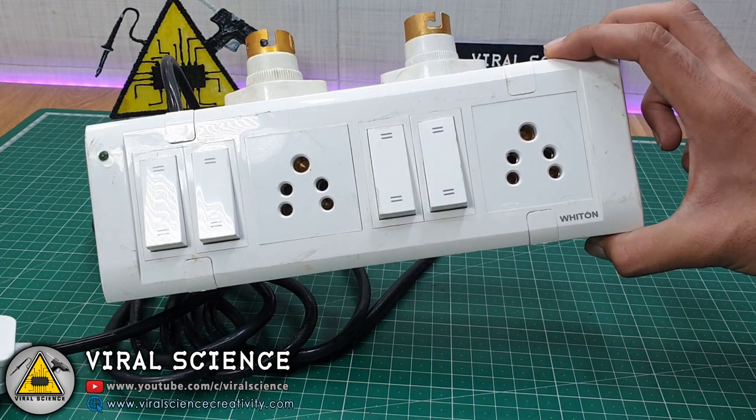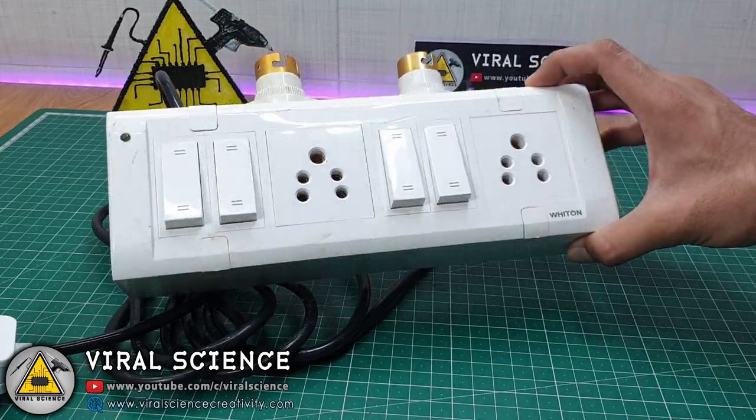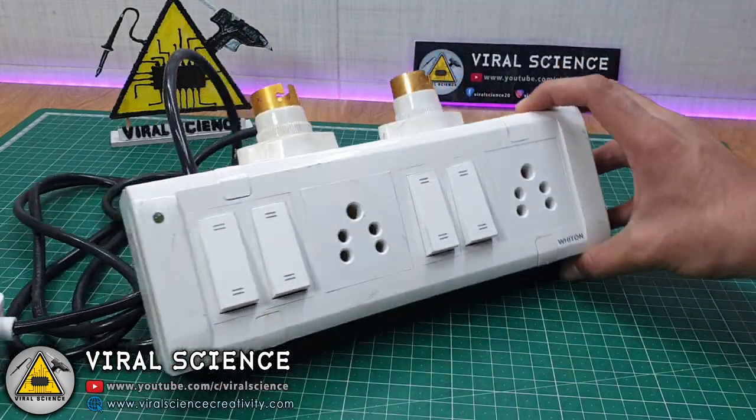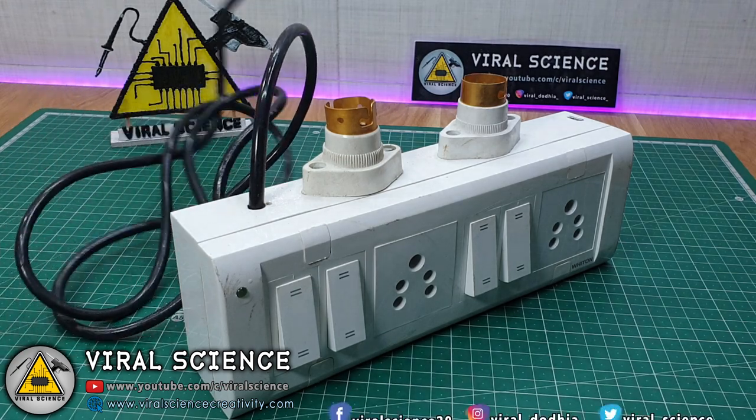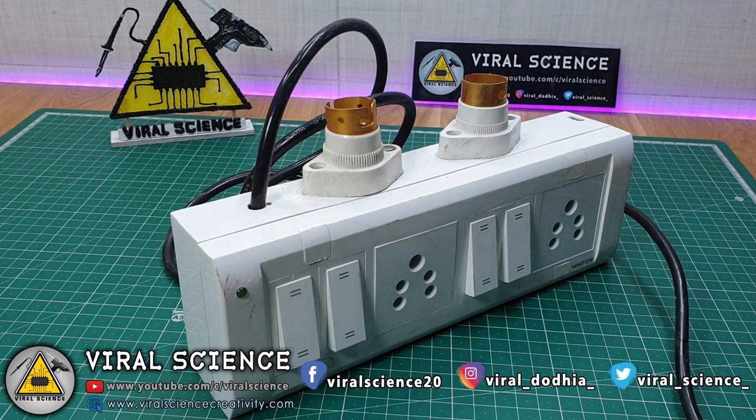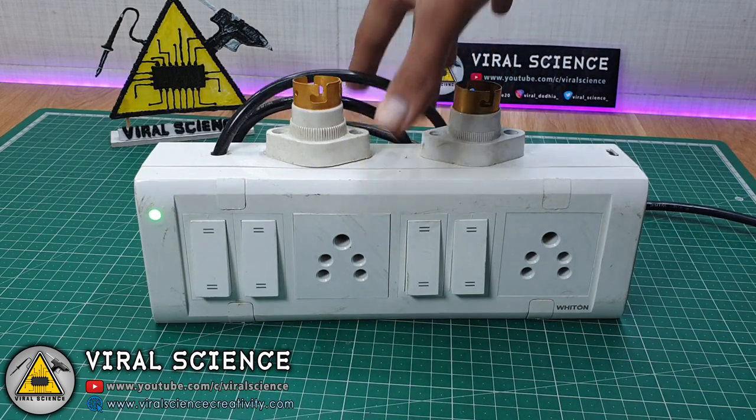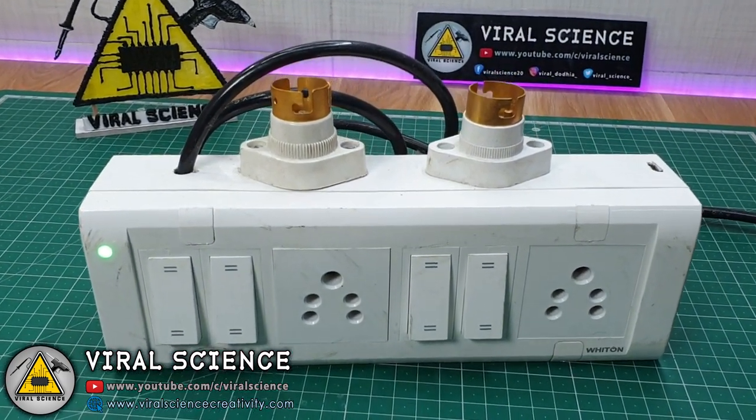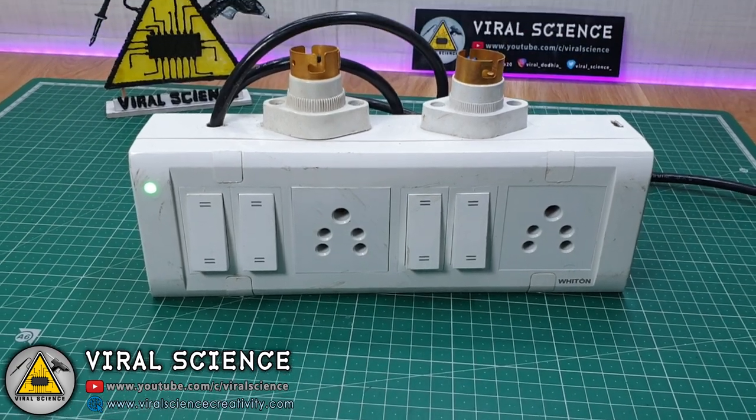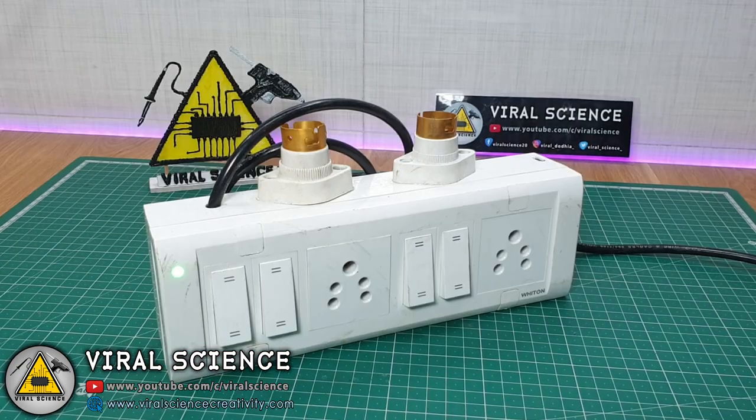Now I have assembled this whole circuit into this extension board. We have two bulb sockets and two normal sockets to connect any appliances. So now I am powering this socket. So our NodeMCU will be also powered inside this, and it will be connected to our Firebase account.